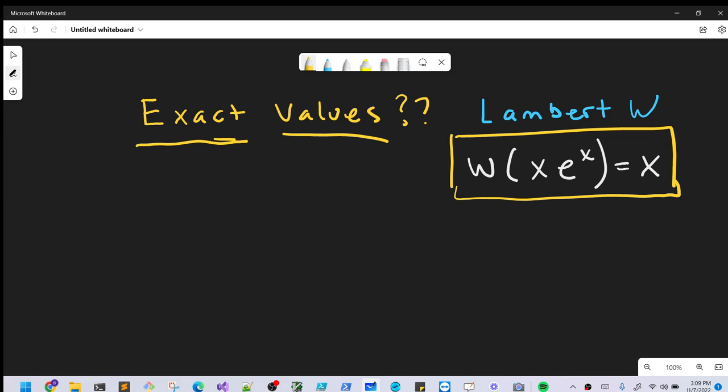That's opposed to the normal case where if we look at the Lambert W, typically we're going to have a long decimal approximation, and we want to get some nice exact values. What we can do is utilize this formula over here on the right, and this formula is going to help us find some of these nice values.